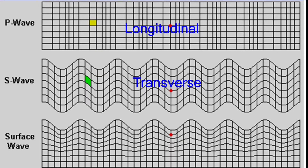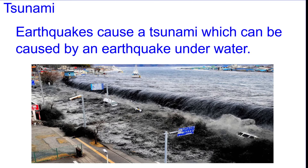There are two waves that really come out of an earthquake. The first one is called a P wave, and that wave is shaped like a longitudinal wave — like a sound wave, like a spring. An S wave is a transverse wave that comes out second — S for second — and that one's transverse. If you have an earthquake underwater, it can cause a tsunami, which is very destructive, essentially like a flood.